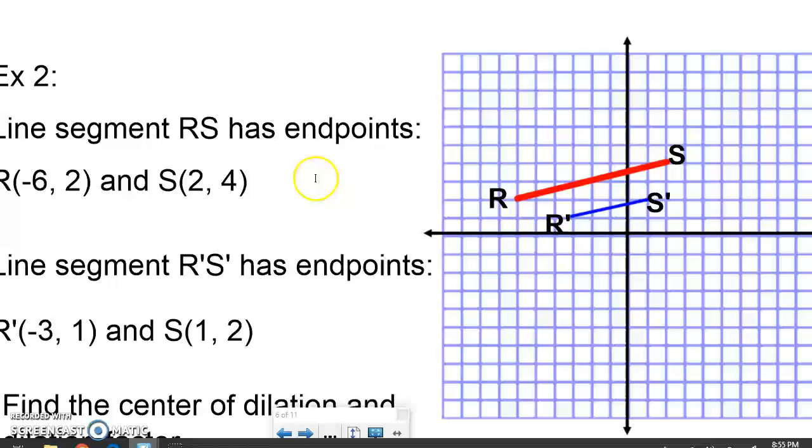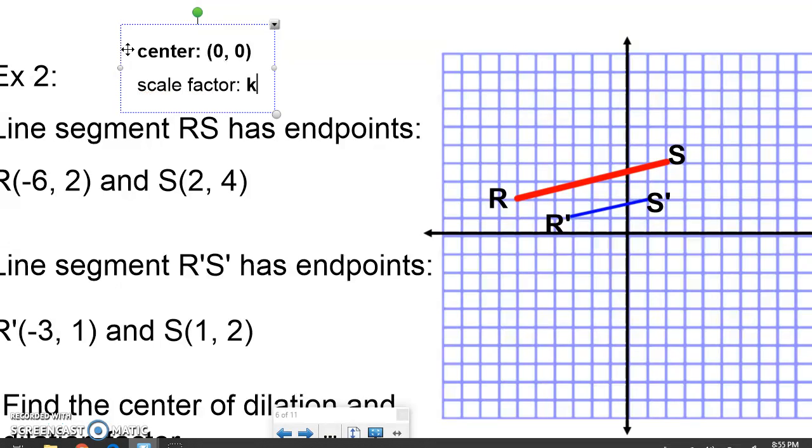You would do the same thing for this next segment. I'm just going to tell you the answers and see if you can do these on your own for the sake of my recording time. You should get that the center is at 0, 0. You should get that the scale factor, or K, is, no, that's a lie. It's obviously getting smaller. It's a half. So it's half the size it was. Okay. So see if you can get that.